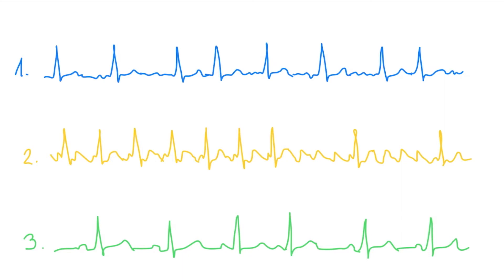But still, the distances — do they change a lot? I mean, it's quite irregular. It's irregular, isn't it? So what could that be? It's very irregular, absolutely irregular. What's that? It's AFib. It's AFib. Very good. AFib, yeah? Yeah, it's AFib.